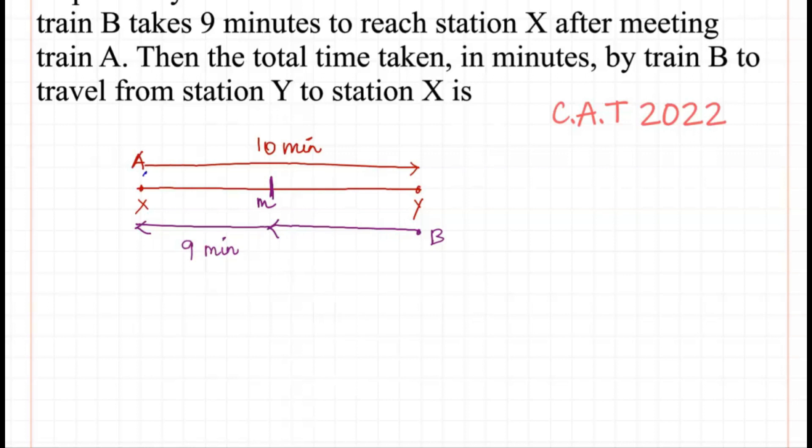So let t be the time taken to reach the meeting point. Train A takes t minutes to the meeting point, then (10-t) minutes from the meeting point to reach station Y. Train B also takes t minutes to the meeting point, then 9 minutes to reach station X.